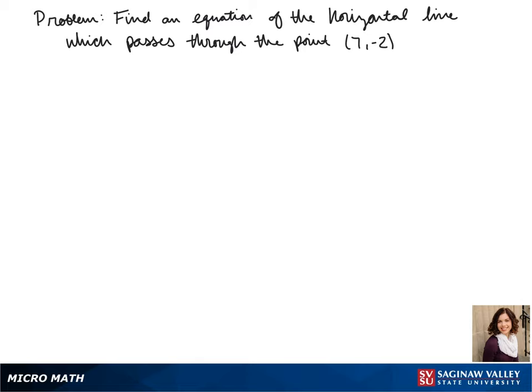Welcome to another day of algebra. Today we'll be finding an equation of the horizontal line which passes through the point 7, negative 2.